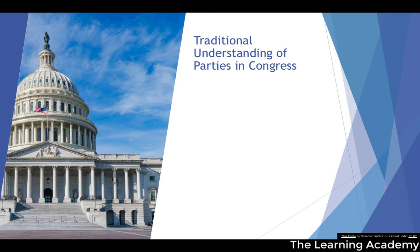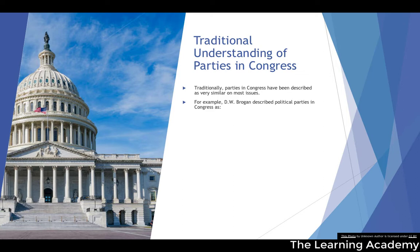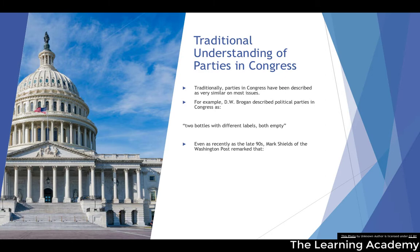By 'new trend' we're talking within the last 20 or so years — relatively new compared to the history of Congress as a whole. So we should start by looking at the traditional understanding of the party system within Congress. Traditionally, the parties are described as having very similar positions on most issues, and really where they differ are on ideological issues. D.W. Brogan described political parties in Congress as being 'two bottles with different labels, both empty.' The more important bit is the 'two bottles with different labels,' effectively suggesting they are one and the same when it comes to political ideas.